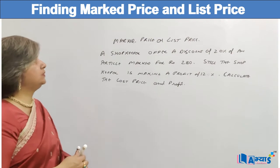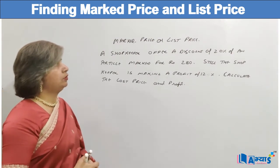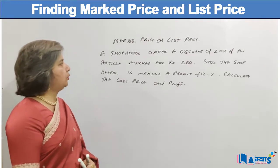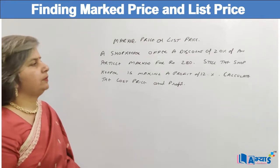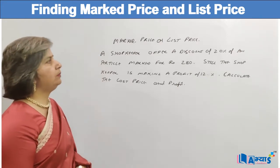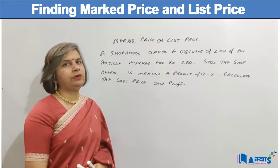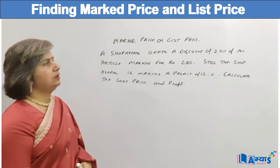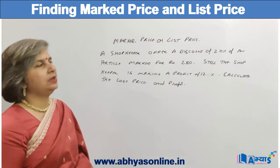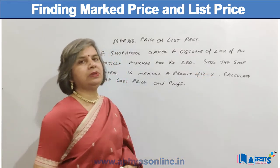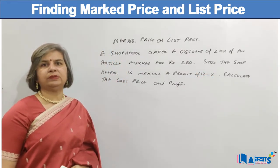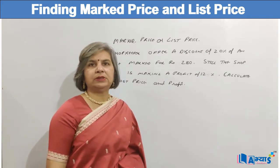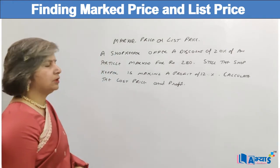A shopkeeper offers a discount of 20% on an article marked for Rs. 280. Still the shopkeeper is making a profit of 12%. Calculate the cost price and the profit. The discount has been offered on the mark price, and when we calculate this discount on the mark price, we can get the selling price. The shopkeeper is still making a profit of 12%, so we need to find the cost price and the profit.